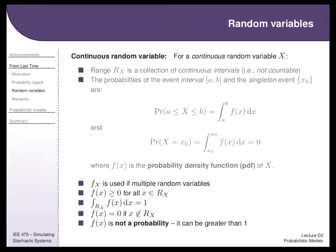These are the properties of density functions. If I'm referring to multiple random variables, I'll use a subscript: f sub X means the density associated with random variable X. Densities are always non-negative. The integral underneath them is equal to one, even though they do not have to be bounded by one. And if X is not in the range, the density equals zero.